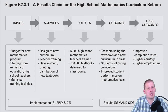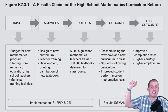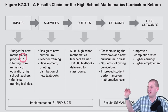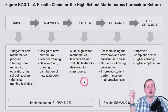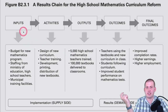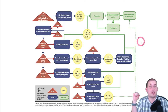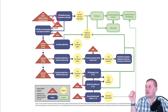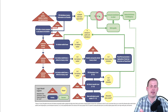A logic model is a little bit more complicated than a results chain. It still has all of the same things, but instead of just listing inputs, activities, and outputs in columns, you are more explicit. As you can see in this picture, a logic model links every input into some specific activity, which then generates some sort of output, which then leads to some sort of outcome.